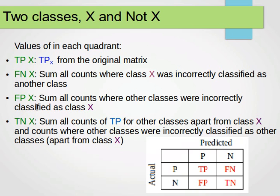So the problem now becomes, for two classes, class X and not X. This is sort of a one-versus-all approach, or one-against-all approach. And the idea now for our 2×2 confusion matrix — remember, predicted are the columns and actuals are the rows, and now we just have two classes: positive and negative, or X and not X. This quadrant will have the true positives, this quadrant will have the number of false negatives, this quadrant the number of false positives, and this quadrant the number of true negatives.